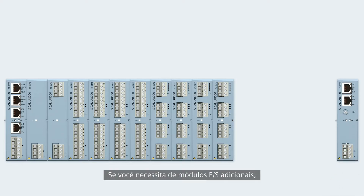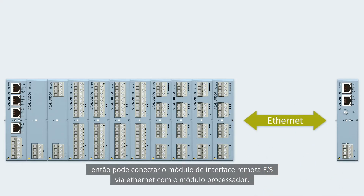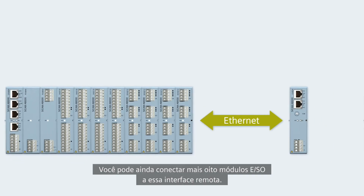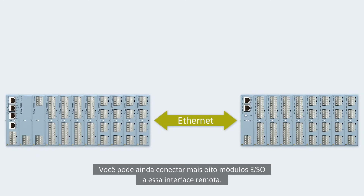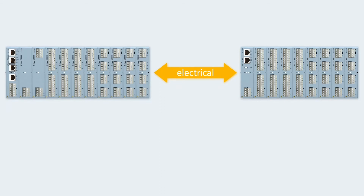If you require further I/O modules, then you connect an I/O remote interface module via Ethernet with the processor module. You can then connect a further 8 I/O modules to this I/O remote interface module.